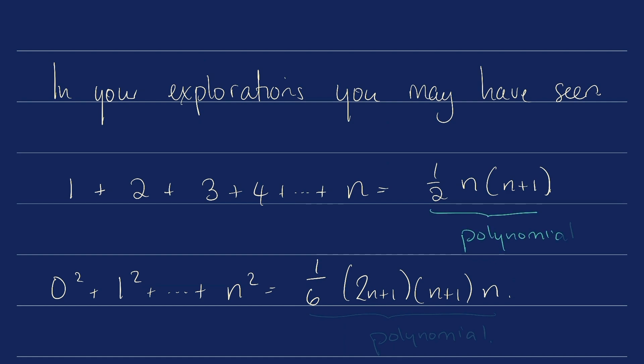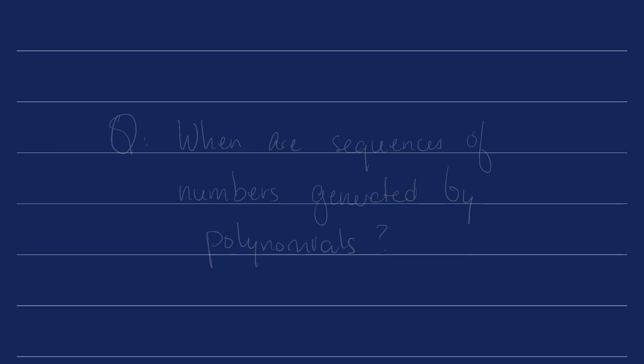The great thing about this is that we can see that this will produce some kind of sequence of numbers, but at each stage the nth term in that sequence is going to be given by a polynomial. Isn't that nice? So here's a question: When are sequences of numbers generated by polynomials?